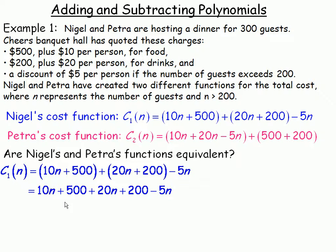If we add the $10N and $20N, that's $30N, minus $5N will be $25N. And $500 and $200 add to $700. So Nigel's cost function simplifies to $25N plus $700.